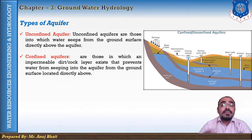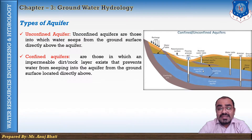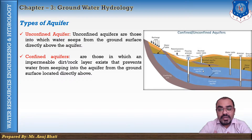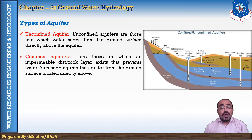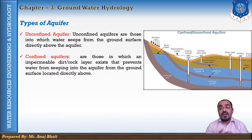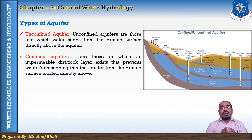A confined aquifer is one where the aquifer is sandwiched between two impermeable layers. It is also known as a pressure aquifer or artesian aquifer. In a confined aquifer, groundwater is completely filled with water and is confined under pressure greater than atmospheric pressure by overlying relatively impermeable strata.